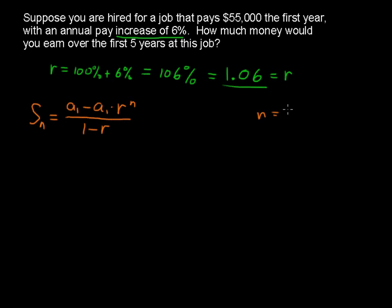n equals 5, five years. r, we already found, is 1.06, and a sub 1 is the 55,000. That's the first year. So let's plug this stuff in.